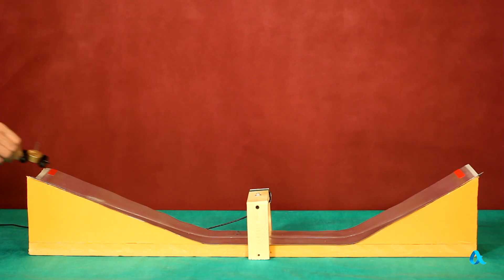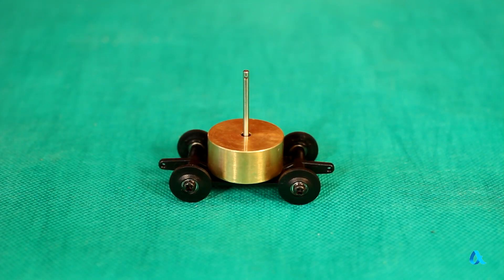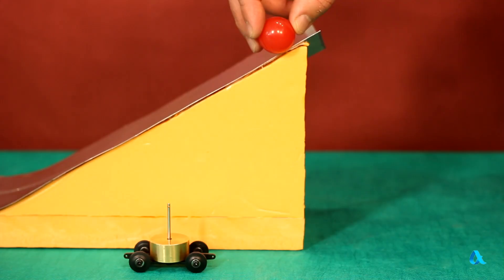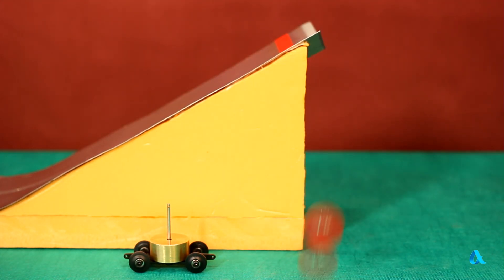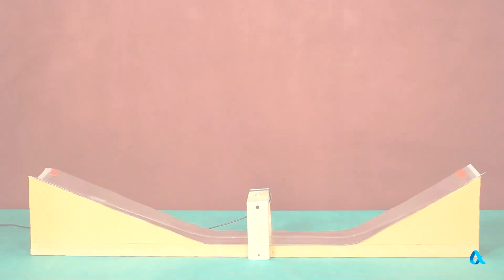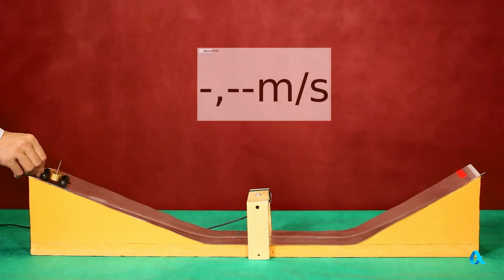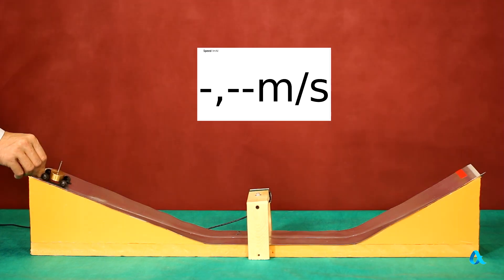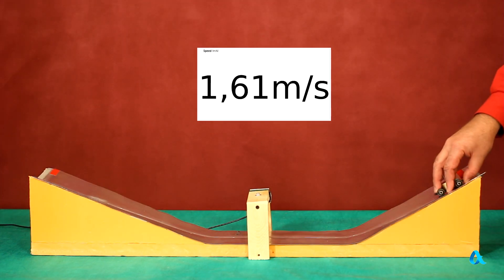We don't have a frictionless sledge, but we have a low-friction trolley. It will roll down the height of 14 cm. When free-falling from such height, a body acquires the speed of 1.65 m per second. Let's see what will happen in our experiment. The photogate readings are 1.61 m per second. Physics works, as always!